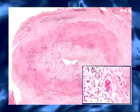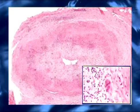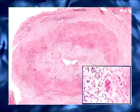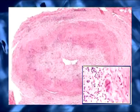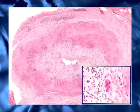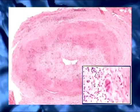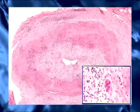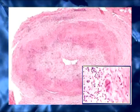The artery itself may be tender or thickened when affected. It may pulsate in the early part of the disease but may become occluded later.